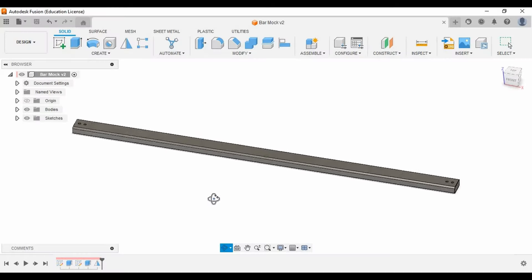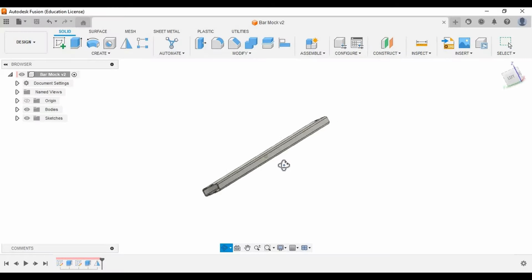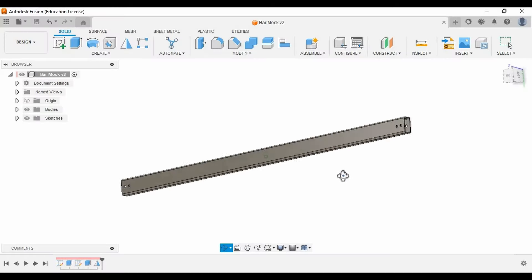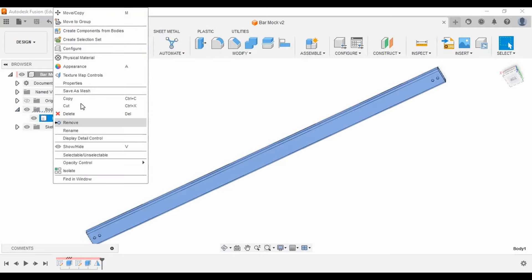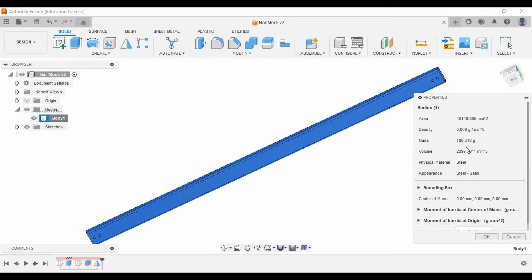The astute among you might have already guessed what this part is. This is the crossbar for Proto One. What's new about it? It's made from stainless steel. It's quite heavy. You might be wondering why I used a heavier material on a machine that's meant to go fast. Well, there's a couple of reasons for that.